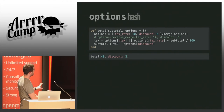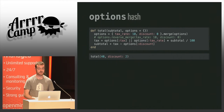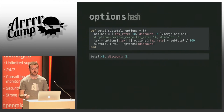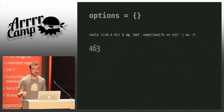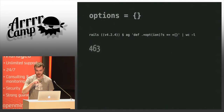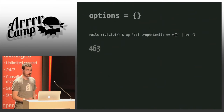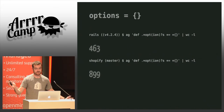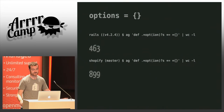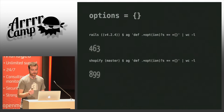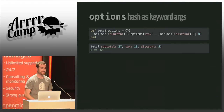The options hash pattern is very popular — every Rubyist uses it a lot. In the latest version of Rails it's used almost 500 times in the whole codebase, and in Shopify it's even more. So let's come back to keyword arguments and try to use the options hash as keyword arguments.